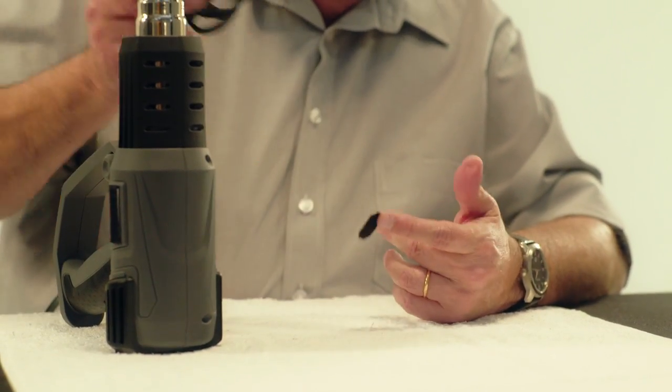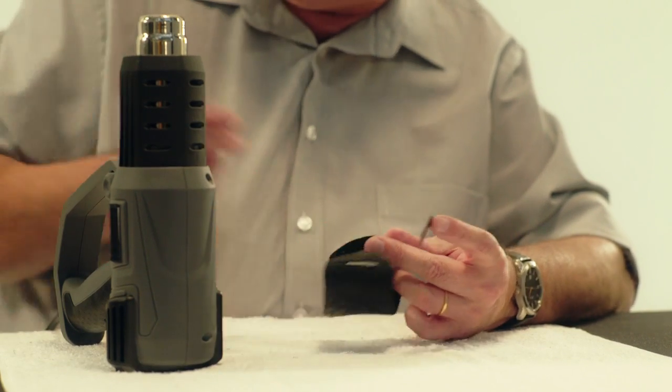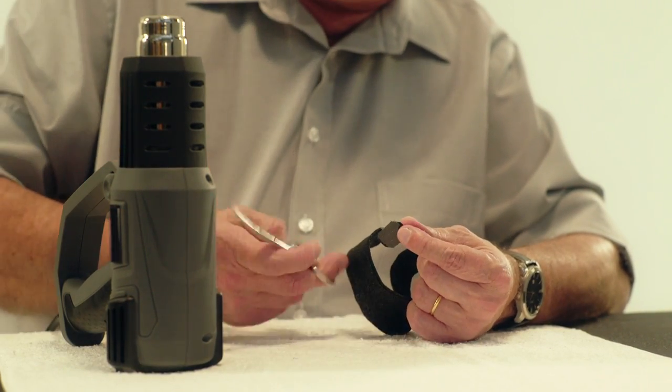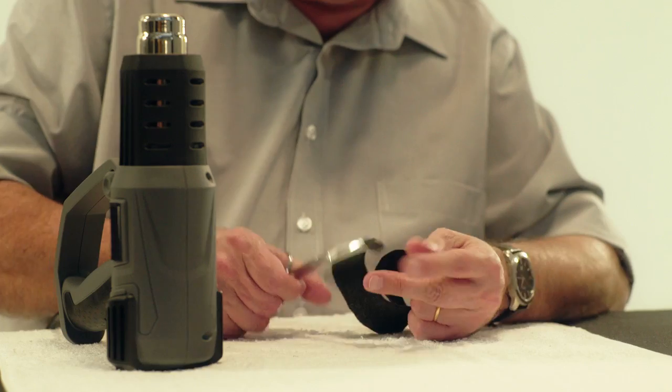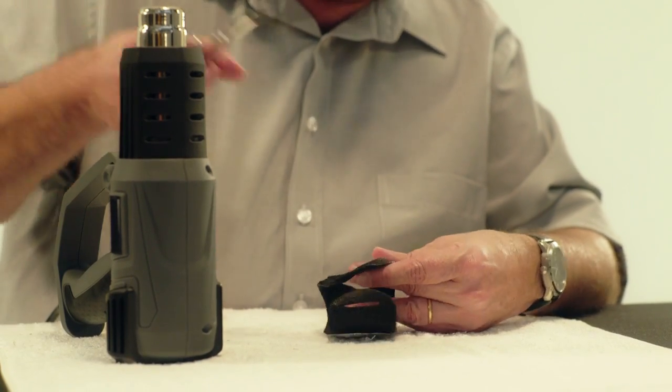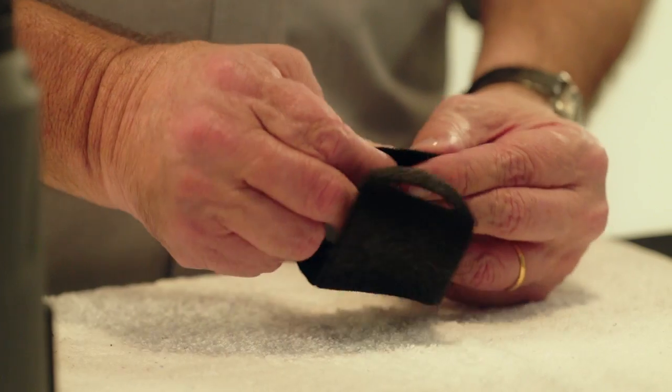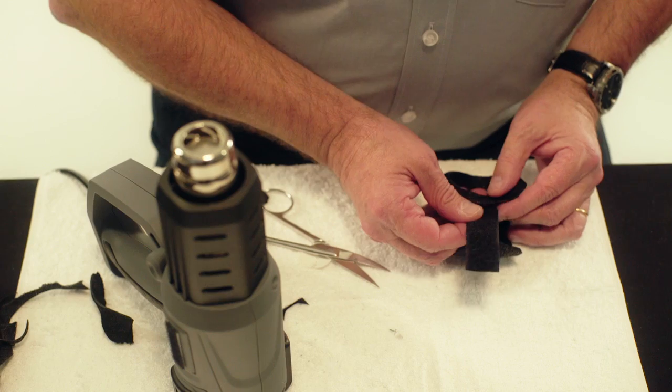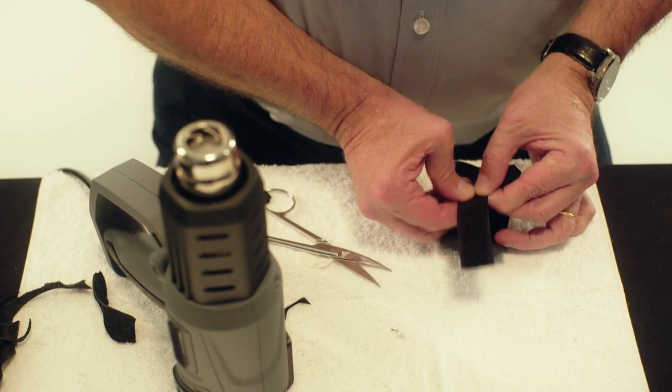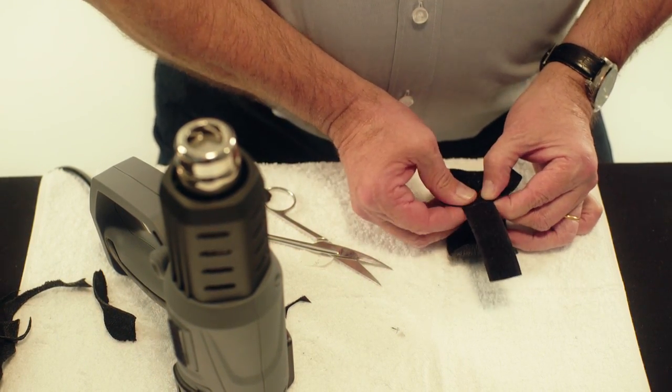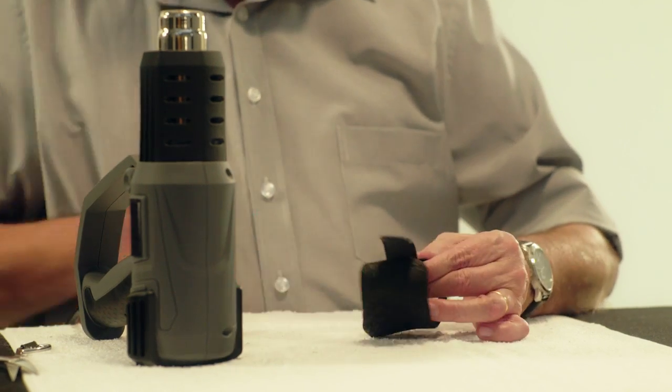Attach the self-adhesive Velcro hook by heating the orthosis on the dorsal surface and the glue side of the Velcro hook with the heat gun and press firmly together. Attach the Velcro loop by heating the orthosis on the inner portion of the opposite side and press the fuzzy side of the Velcro loop into the thermoplastic material.